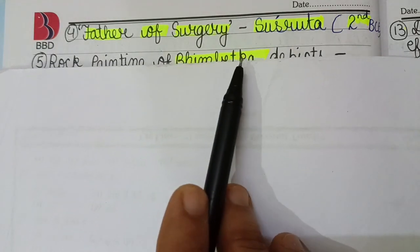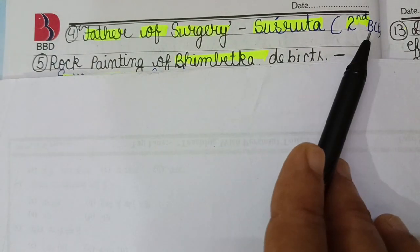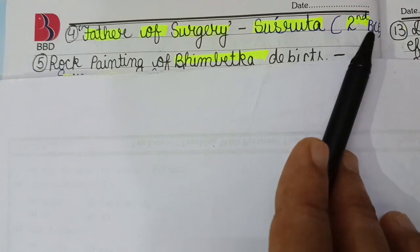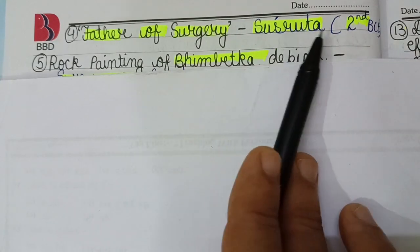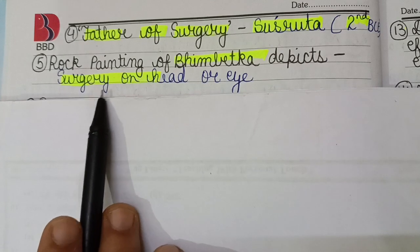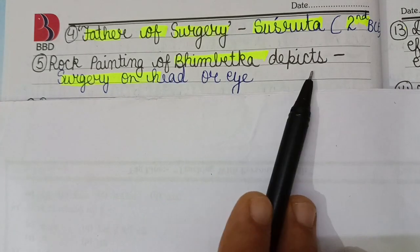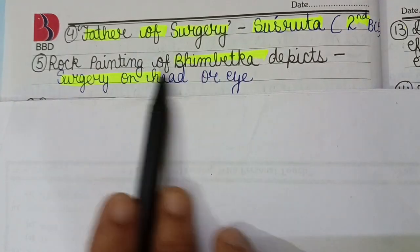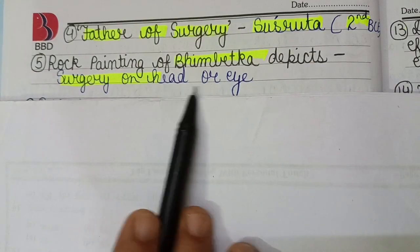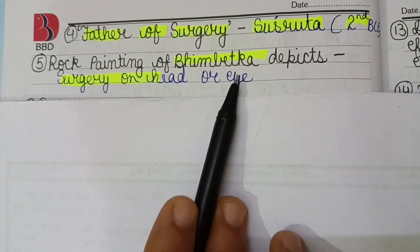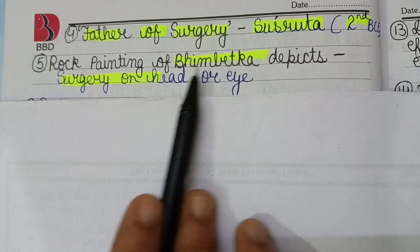The father of surgery is Sushrut, who lived in the second century BCE. The rock paintings of Bhimbetka depict surgery on the head or eye, providing early evidence of surgical practices in ancient India.